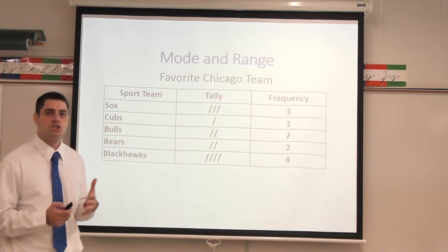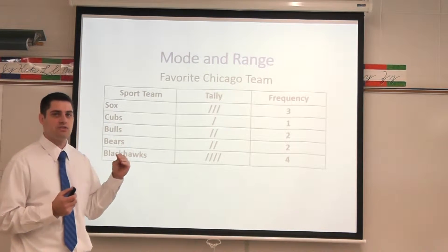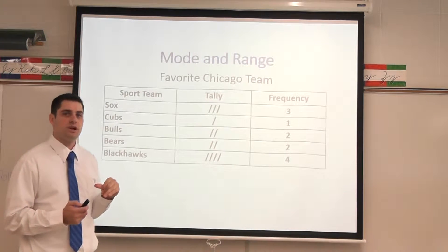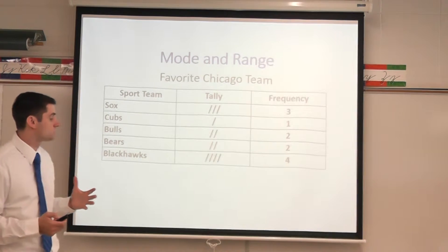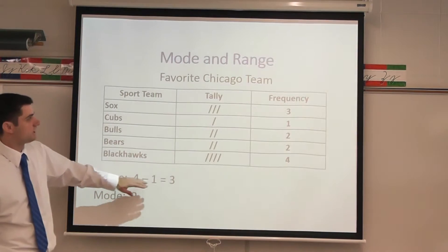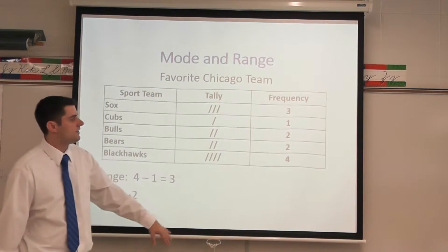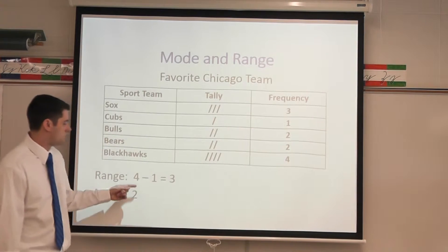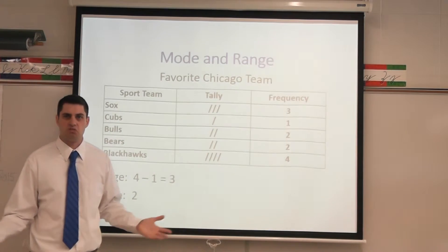To find the range, you need to take the highest amount of our frequency and subtract the lowest amount from it. Our greatest frequency here was four and the lowest was one, so four minus one is three.